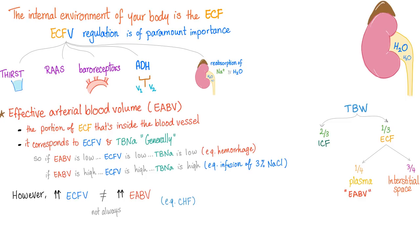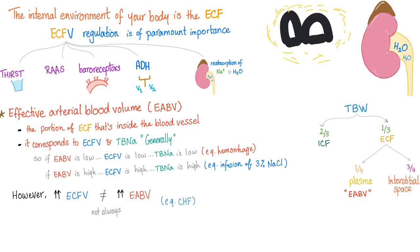Why? Because your cells live in that extracellular fluid. So if this is your cell and this is your extracellular fluid, basically your cells are bathing in this extracellular fluid. That's why it's the internal environment. That's why regulation of the extracellular fluid volume is very important. How does your body regulate it? First, thirst mechanisms — we have talked about it in video number 10 on osmolality and tonicity.